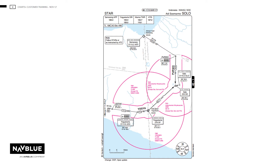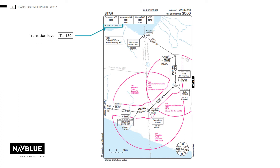Several STARs can be shown on the same chart. Charts can be presented in portrait or landscape. Communications will be shown in order and charts drawn to scale as far as possible. The transition level and aerodrome elevation are to be shown at the top, underneath the comms.